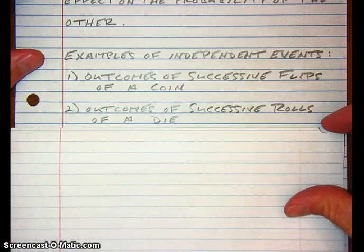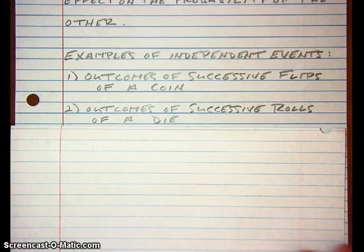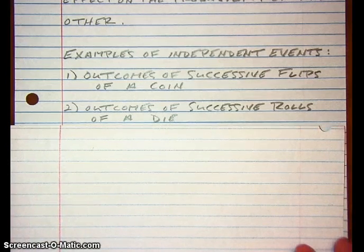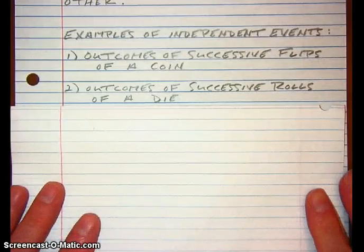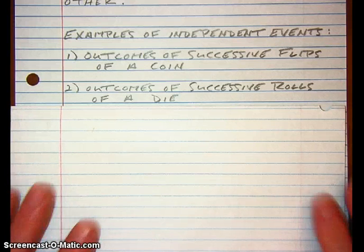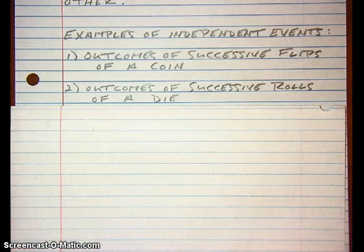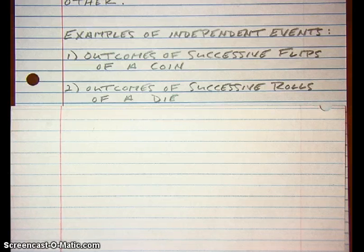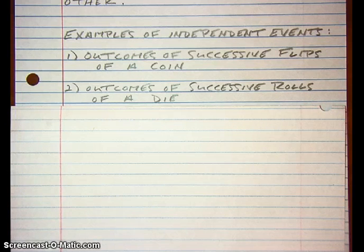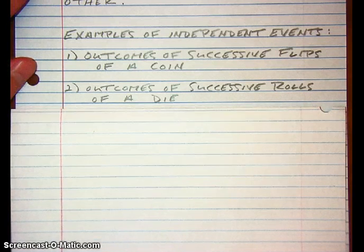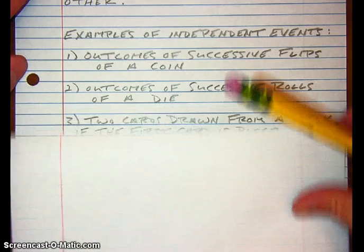If you look at successive rolls of a die, those outcomes would also be independent. Dice have no memory. However many times you've got sixes or ones or whatever, the probability of getting a six is always one sixth, regardless of what's happened in the past. So successive rolls of a die are independent.